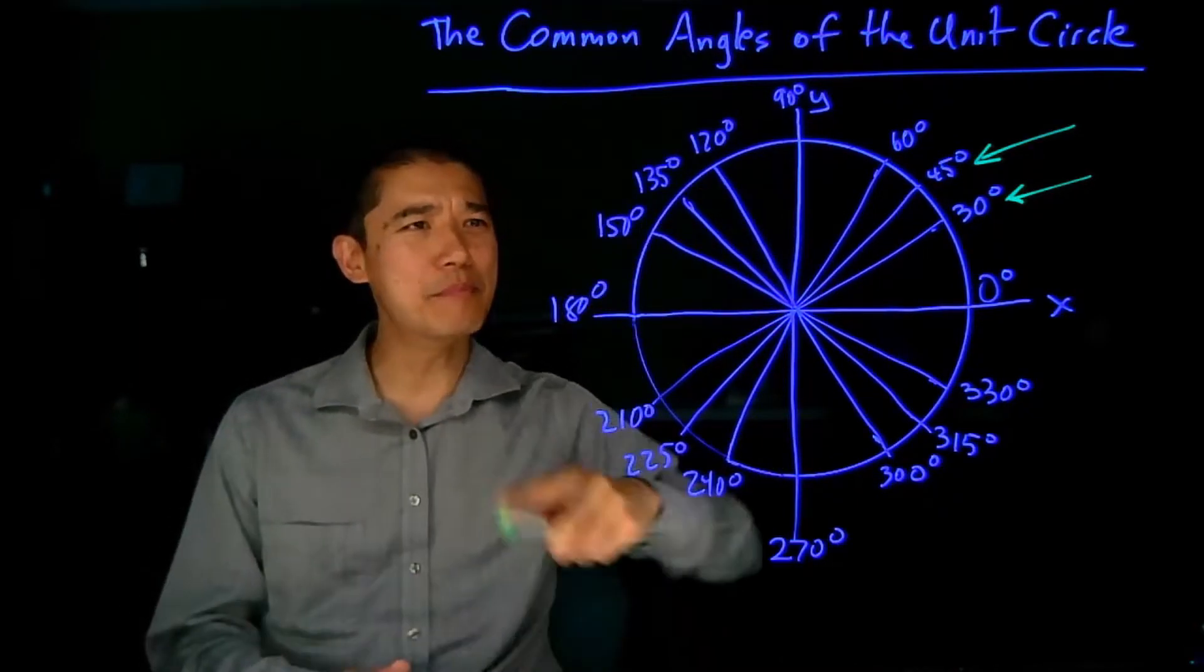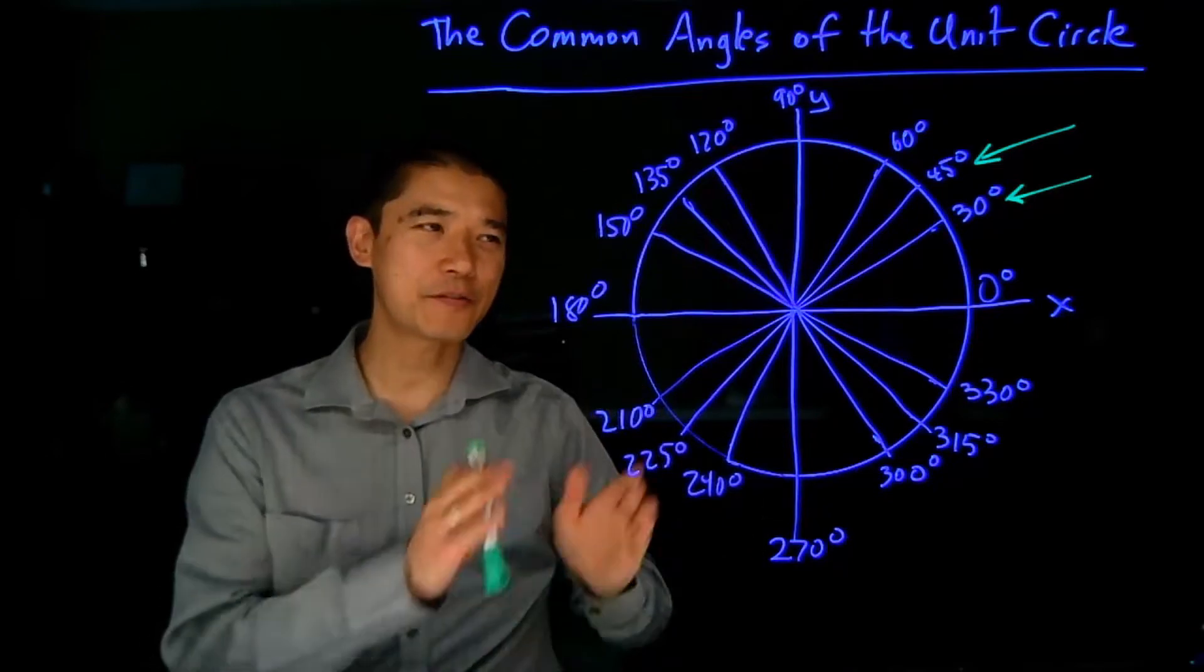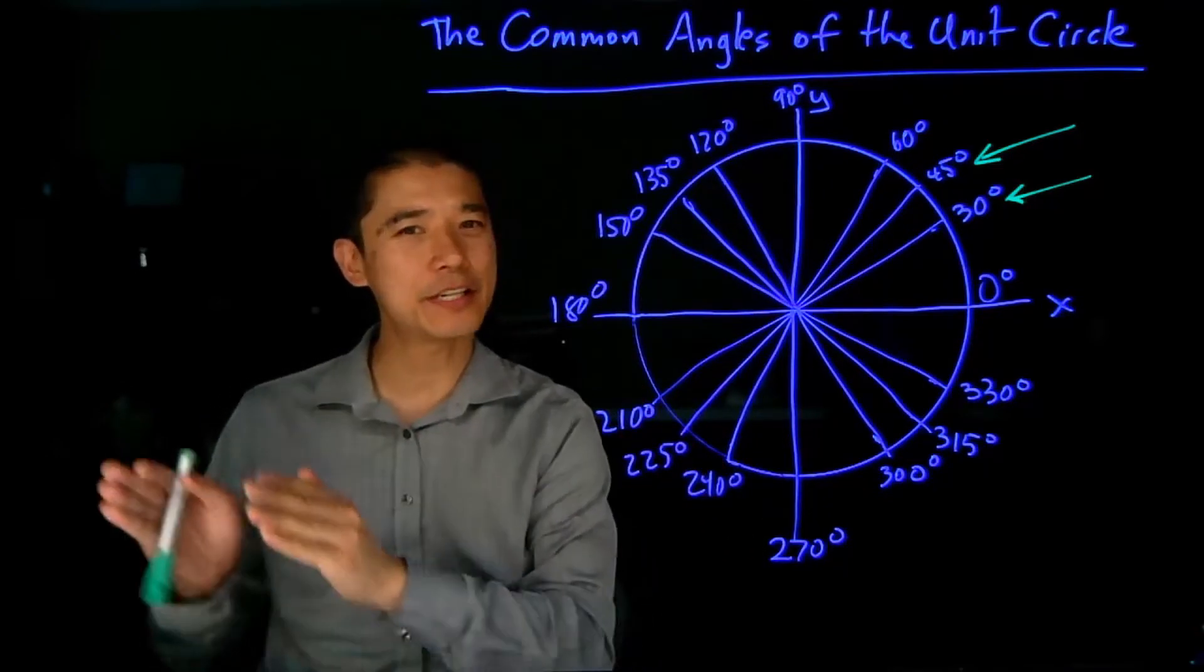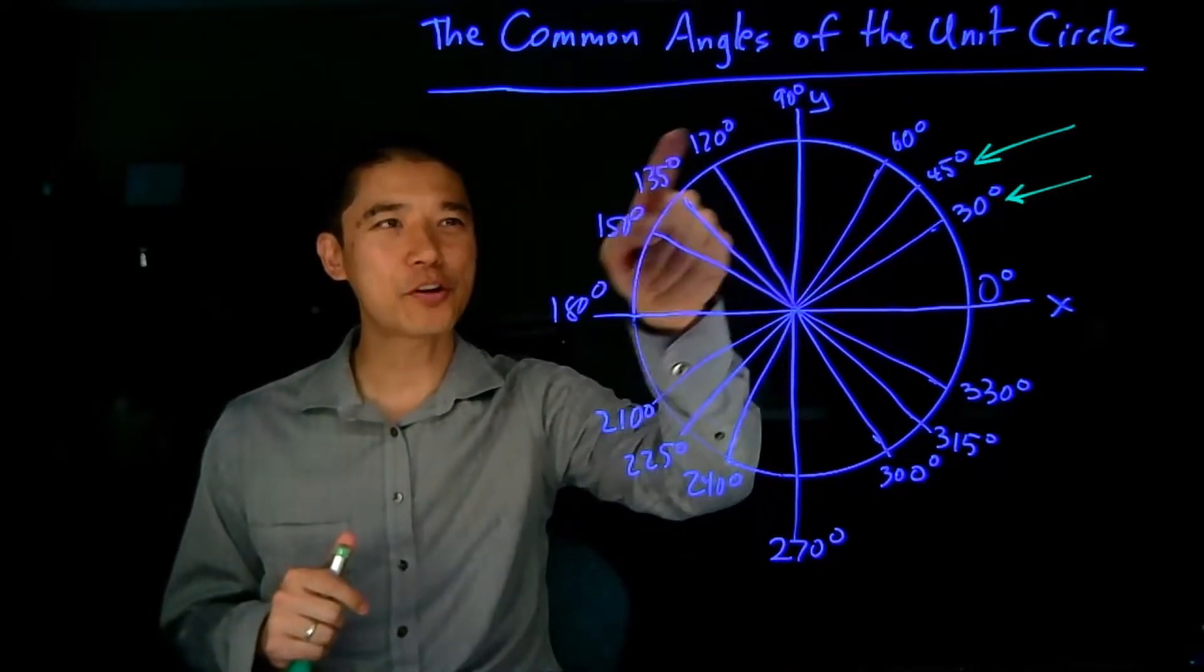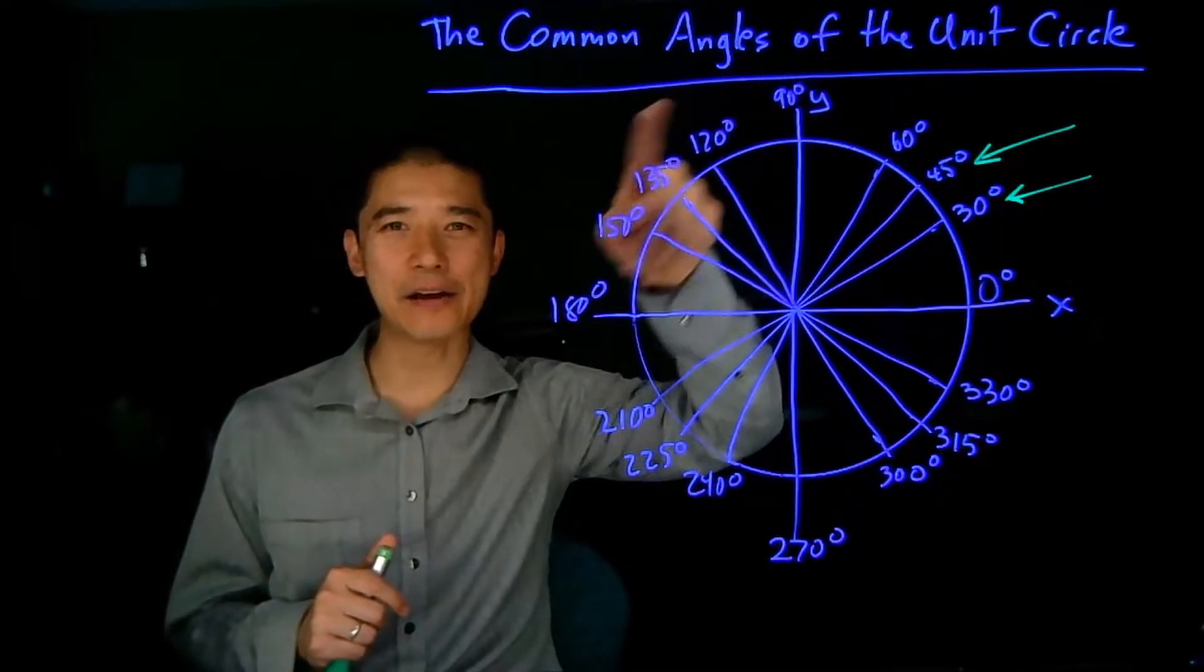So again, rather than memorizing this whole thing, just focus on the angles 30 degrees and 60 degrees. And then as you march your way around the circle, you can fill out the rest of these values.